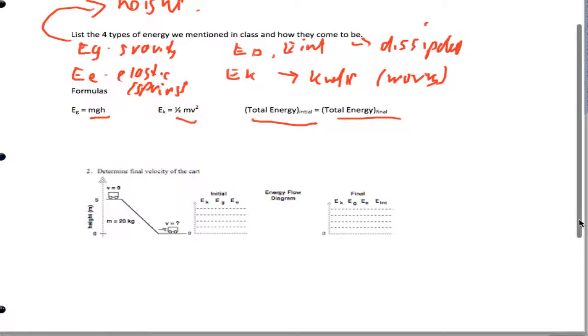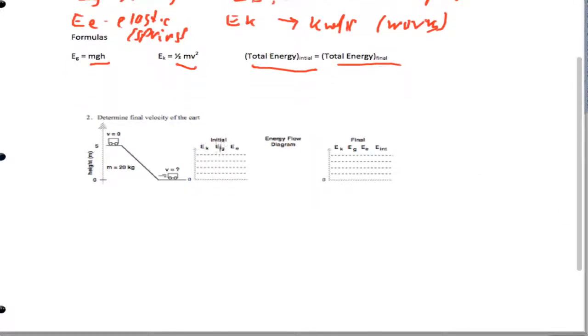So what we did is we did a couple problems. The first problem is something like this where we got gravity energy all at the top here, and no kinetic. What is happening is when we reach the bottom, all our gravity energy gets converted into kinetic, and that's a general rule: if I don't tell you, you should assume that there is absolutely no dissipated energy.